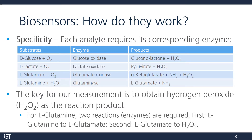You may have noticed that in the table, hydrogen peroxide is not one of the products for the glutamine and glutaminase reaction. Therefore, if you want to measure glutamine concentrations, you'll need to have two enzymes present: glutaminase and glutamate oxidase.